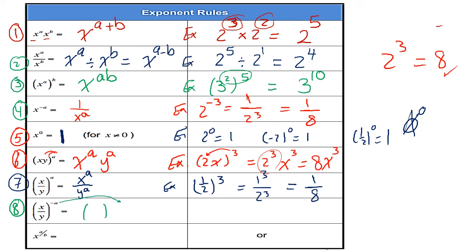Rule number 8: if I have a fraction with a negative power, I first find the reciprocal — I flip the fraction and change the sign of the power to positive. For example, one-half to the power of negative 3: I flip one-half to get 2, and change the power to positive 3, giving 2 to the power of 3, which is 8.